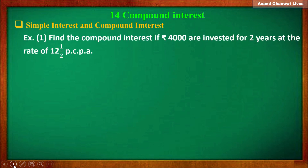Now let us solve this example: find the compound interest if 4000 rupees are invested for two years at the rate of 12 and 1/2 percent pcpa. You know that the formula for compound interest is A = P × (1 + r/100)^n. This is a very important formula, where A is the amount.